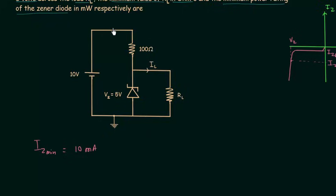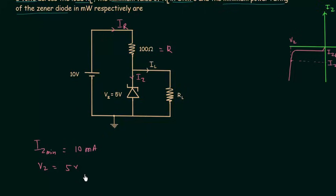IL is the load current, Ir is the current in this branch, and 100 ohms is the value of R — the current limiting resistance. This current is Iz. Vz is equal to 5V and Vi is equal to 10V. We have to calculate RL minimum.